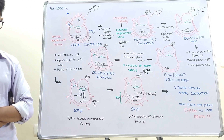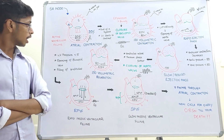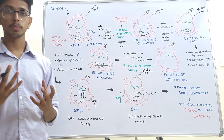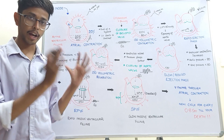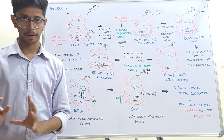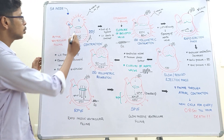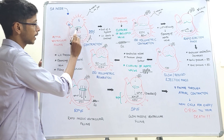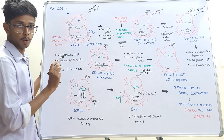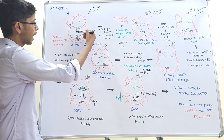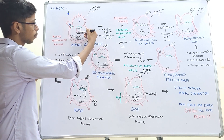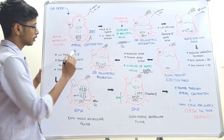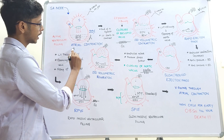Before discussing the phases, we should know that blood always tries to move from an area of high pressure to an area of low pressure. There are two valves on the left side of the heart: the bicuspid valve and the aortic valve. These valves prevent the backflow of blood from one chamber to the other. Now we will start with the first phase — atrial contraction.